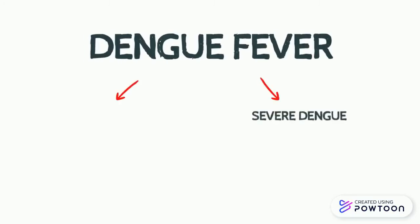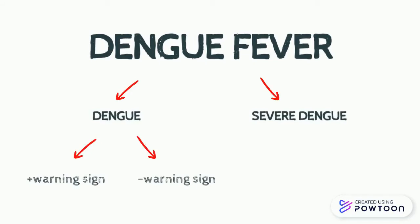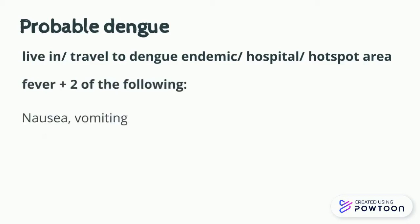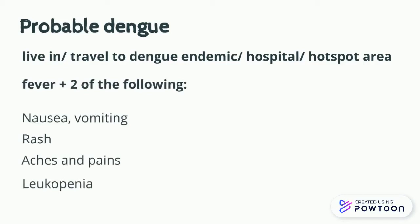There are three classifications of Dengue: Dengue without warning signs, Dengue with warning signs, and severe Dengue. We need to know and remember all the criteria for probable Dengue, warning signs, as well as severe Dengue. You should suspect Dengue in patients who have been to an area with an outbreak, and if the patient presents with fever and two of the following criteria: nausea, vomiting, rash, aches and pain, leukopenia (low white cell count), or any warning signs.